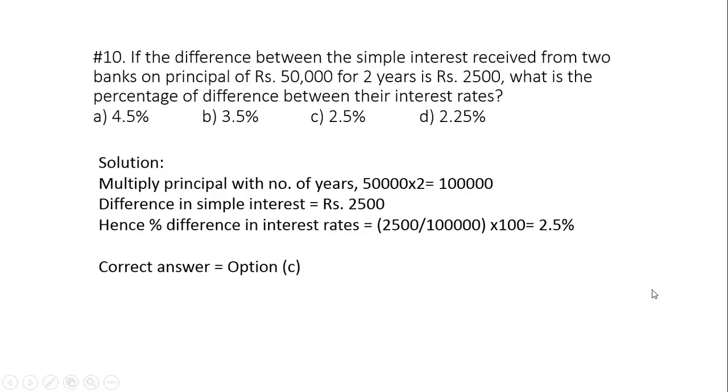Question 10: If the difference between the simple interest received from two banks on principal of rupees 50,000 for two years is rupees 2500, what is the percent of difference between their interest rates? First we will multiply the principal with number of years: 50,000 multiplied by 2 will give 1 lakh. Now difference in simple interest has been given as 2500. Using the given information, we can easily calculate difference in interest rates. Divide 2500 with 1 lakh and convert it into percentage by multiplying with 100. We get 2.5 percent, so the correct answer is option number C.